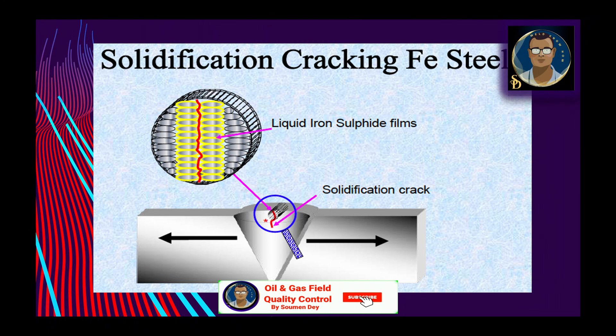A sulfur-enriched liquid film entrapped inside the weld causes solidification cracks. It is important that welding fabricators do not weld on or near metal surfaces covered with scale or contaminated with oil and grease. Scale can have a high sulfur content, and oil and grease can supply both carbon and sulfur. Contamination with low-melting-point materials such as copper, tin, lead, and zinc should also be avoided during welding.